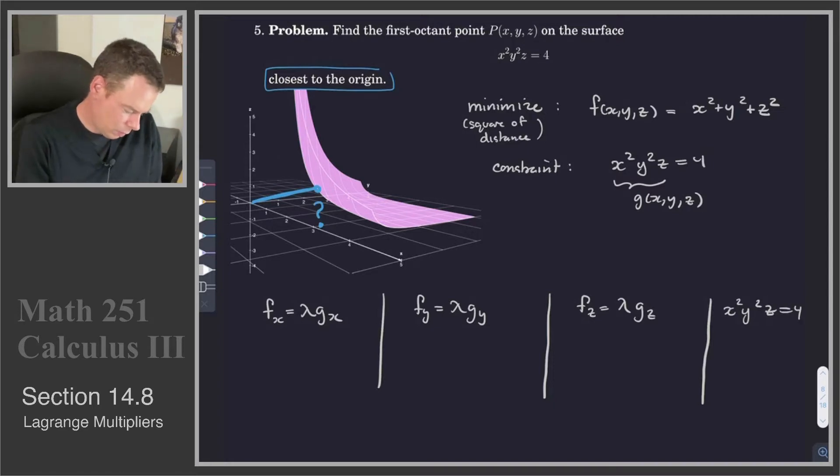So our derivatives are going to be 2x. That's equal to lambda g sub x. G sub x is 2xy squared z. So that would be 2 lambda x y squared z. F sub y, that's 2y. That's equal to lambda g sub y. So that's 2 lambda x squared y z. F sub z is 2z is equal to lambda times g sub z. So that's lambda x squared y squared.